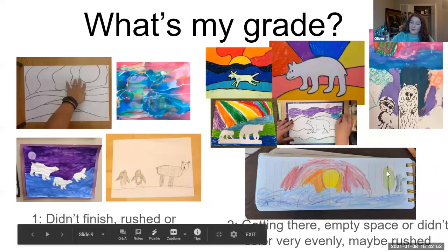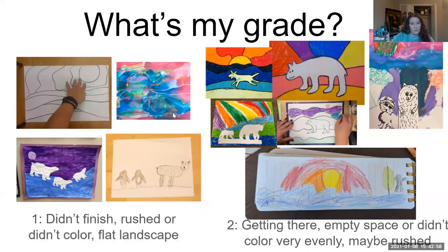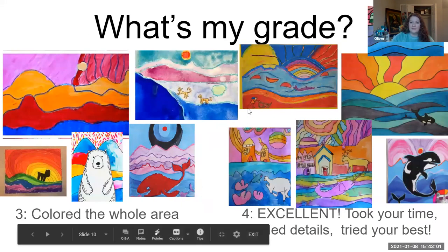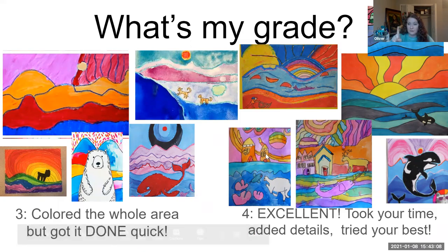We talked about how to get a four on this project. You don't want to leave it too simple, and you don't want to rush. You want to take your time and give me lots of colors, lines, and details. You only have to draw one animal, but you're welcome to do more than one. That is how you can earn a four — by taking your time, adding details, and trying your best.